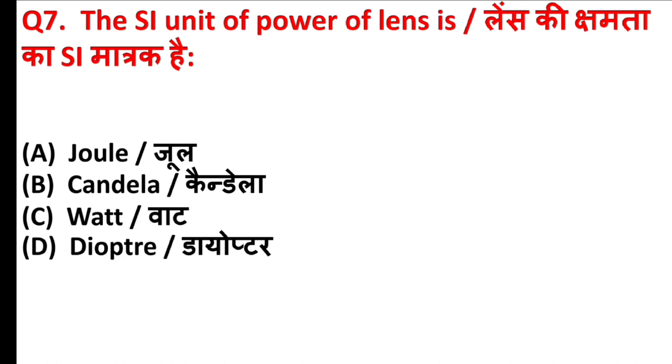The SI unit of power of a lens is? The answer is Option D, Diopter.